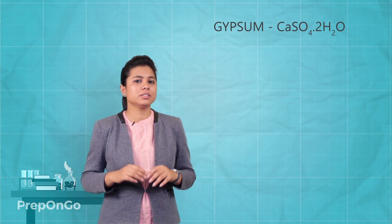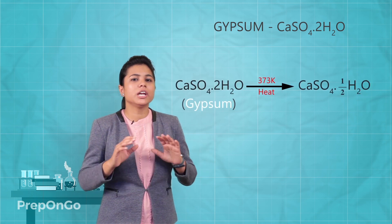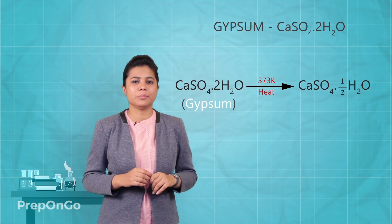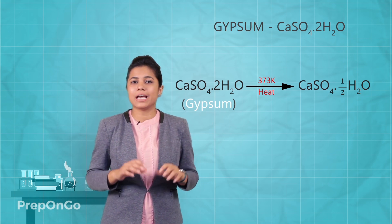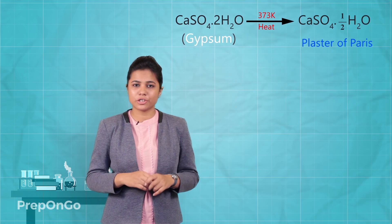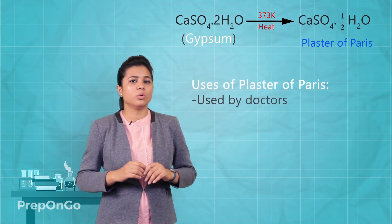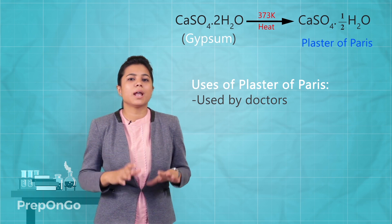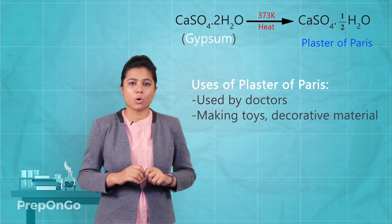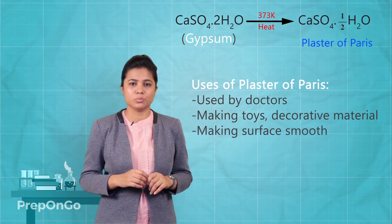On heating gypsum at 373 Kelvin, it loses its water molecules to form calcium sulphate hemihydrate. This is called plaster of Paris. Plaster of Paris is used by doctors for keeping fractured bones in the right position. It is also used in making toys, decorative materials, and for making surfaces smooth.